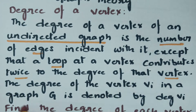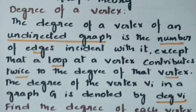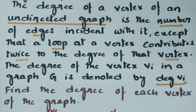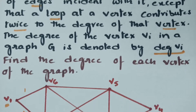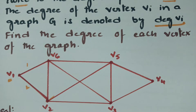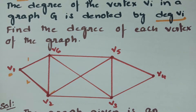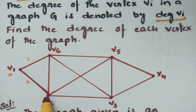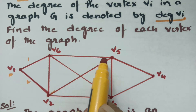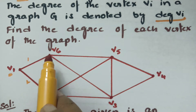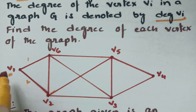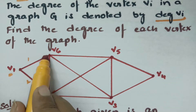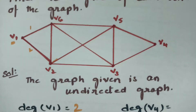The degree of vertex i in a graph G is denoted by degree(vi). Here is an example — we have to find the degree of each vertex of a graph. The vertices are v1, v2, v3, v4, v5, and v6. The dots or points are vertices, and the connecting lines are edges. For v1, there are two edges incident with it, so the degree of v1 is equal to 2.